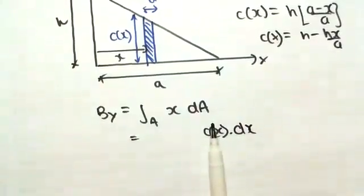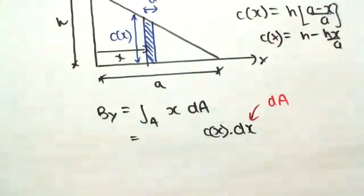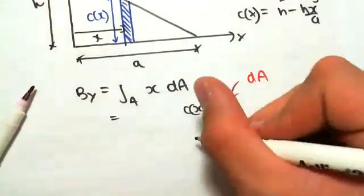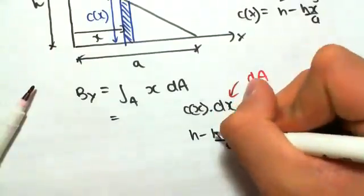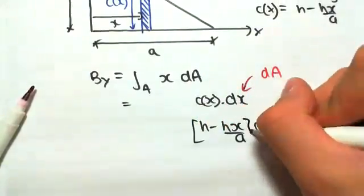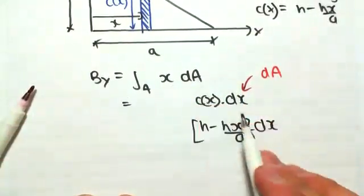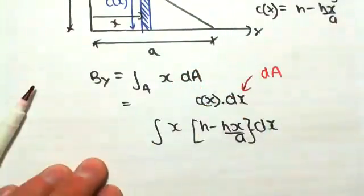That's the same as dA, which we know is c(x) is h minus hx/a, times dx. And we have an x, we have an x out the front. So that was the dA component, is all this. We still have an x out the front, and integral.